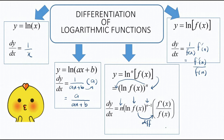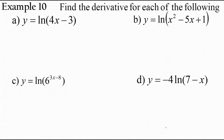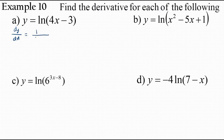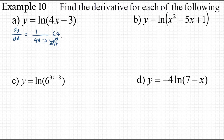Now we will do some exercises. Part a: y equals ln(4x − 3). So dy/dx equals 1 over (4x − 3) times the derivative of (4x − 3), which is 4. The final answer is 4 over (4x − 3).